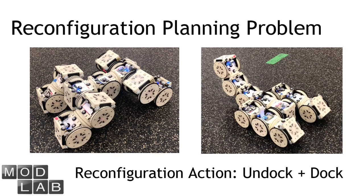The reconfiguration planning problem focuses on finding a sequence of reconfiguration actions to convert a robotic system from its initial configuration to a goal configuration. For example, we want to find a sequence of undocking and docking actions between modules to convert a walker into a vehicle with an arm.